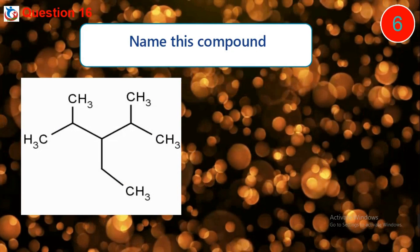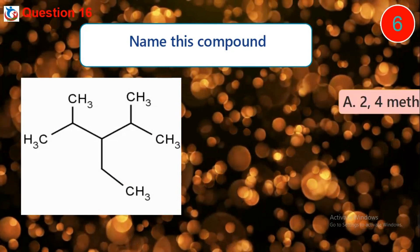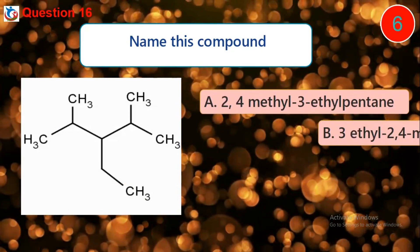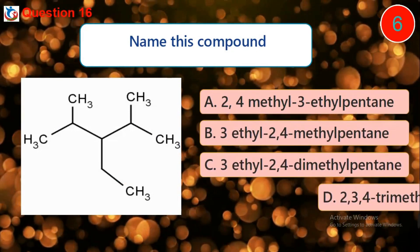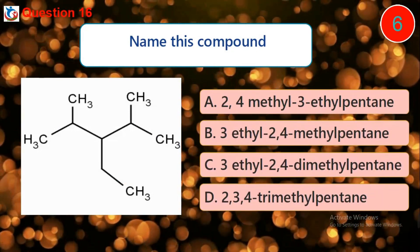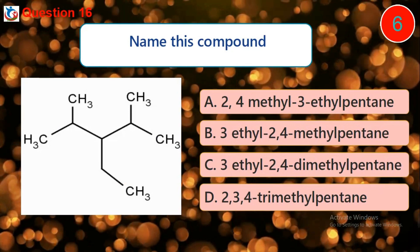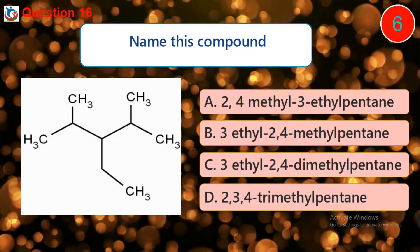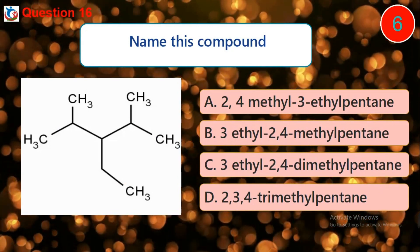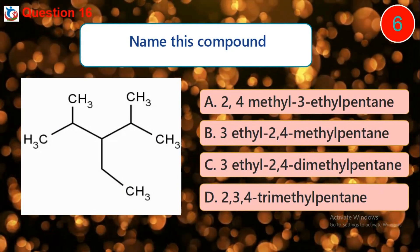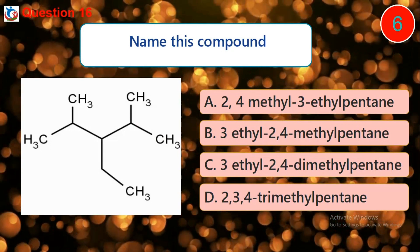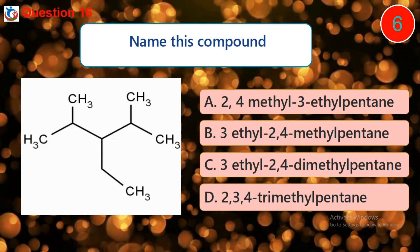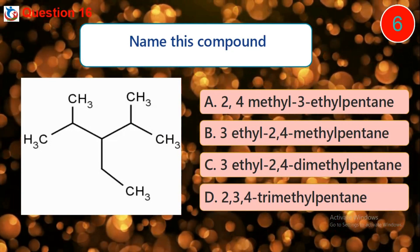Name this compound. A. 2,4-dimethyl-3-ethyl-pentane. B. 3-ethyl-2,4-dimethyl-pentane. C. 3-ethyl-2,4-dimethyl-pentane. D. 2,3,4-trimethyl-pentane.